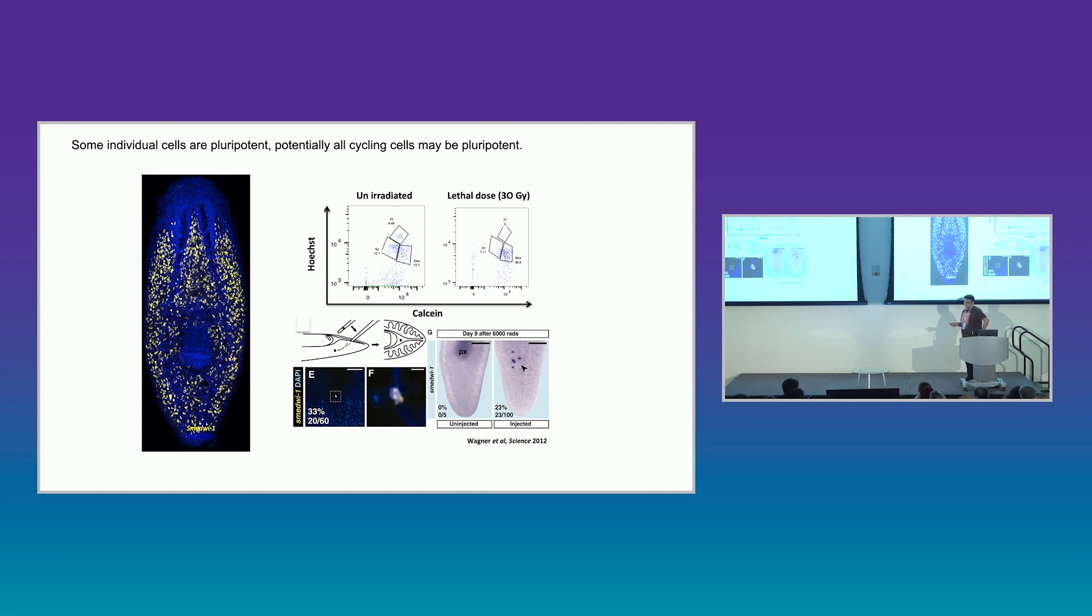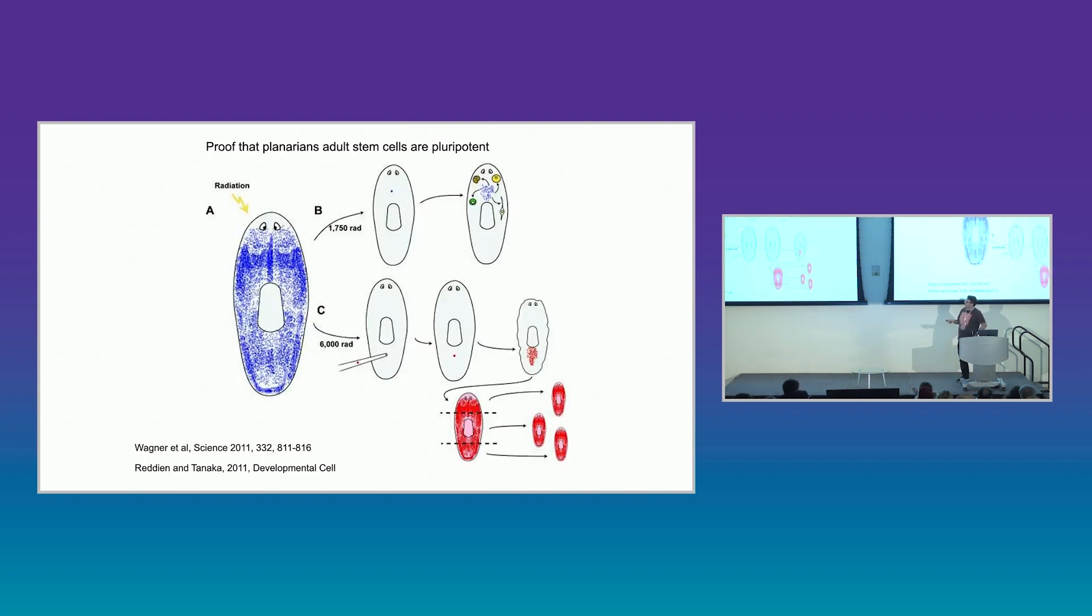And we know that at least some of these stem cells are pluripotent, because we can take a single cell, and we can inject it into an animal, and it will rescue the whole animal. So that cell can maintain the whole animal. And from that animal that you've rescued with one cell, you can actually generate a whole colony of animals. So that's definitely a stem cell, and it's definitely pluripotent.